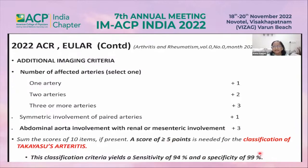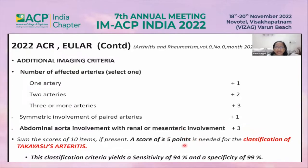The specificity of this criteria is 99%. Classification criteria should always be applied when recruiting patients for research trials where we want to be certain we are dealing with Takayasu or giant cell arteritis. In OPD practice, even if a patient scores three points, we can diagnose that patient. Classification criteria and diagnostic criteria are not synonymous.